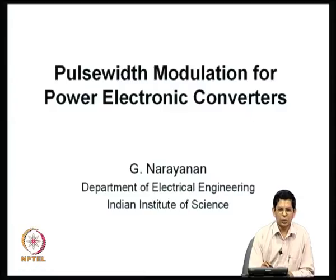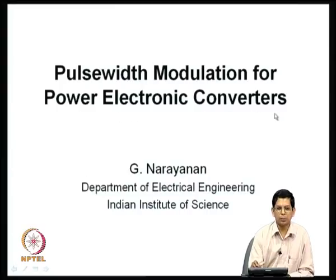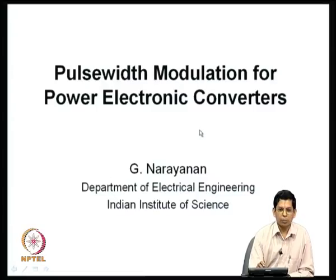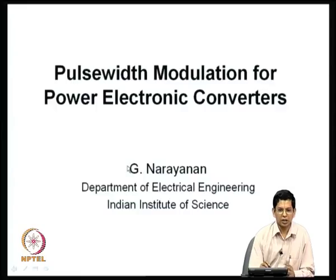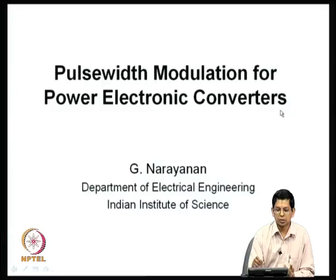You use power electronic converters to convert DC into AC, or AC into DC, or DC of one voltage level into another, or AC of one frequency rectified into DC and converted back into AC of another frequency. Pulse width modulation is required for operating these power electronic converters, which essentially have several switches that need to be turned on and off appropriately — and that is what PWM does.